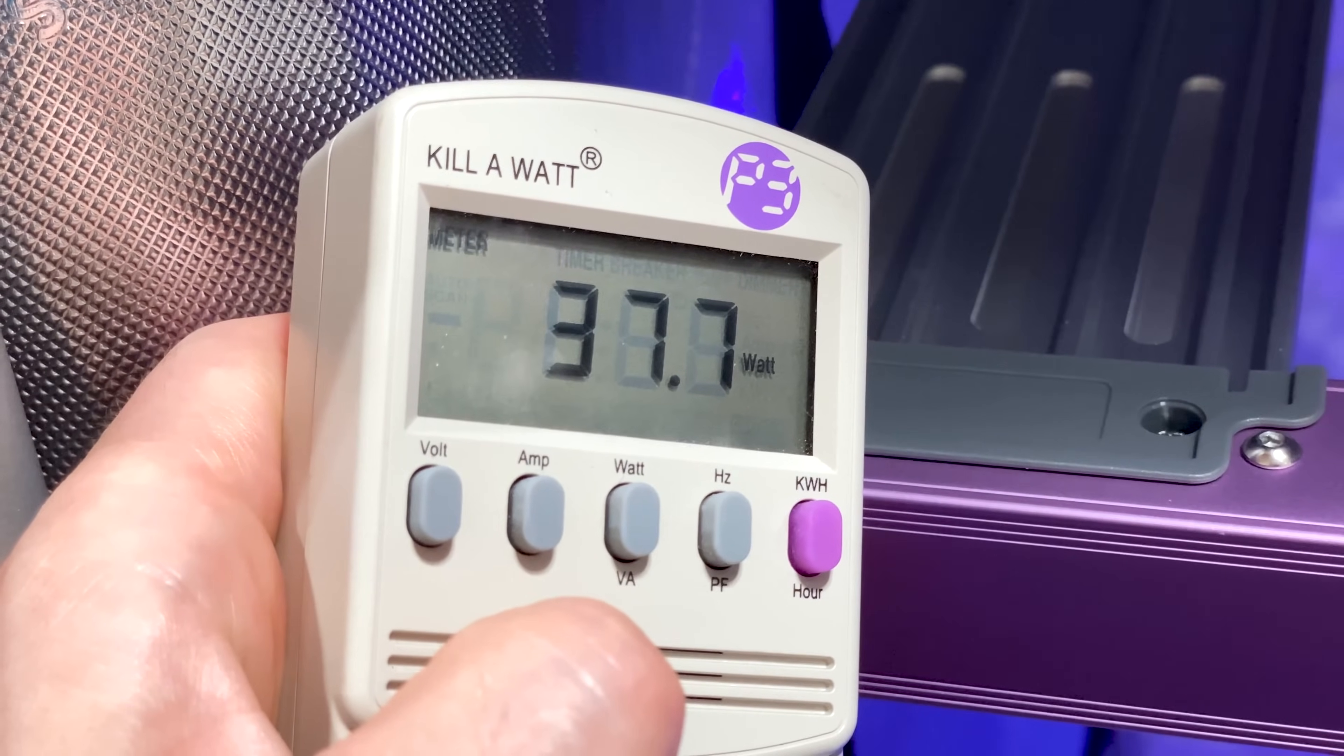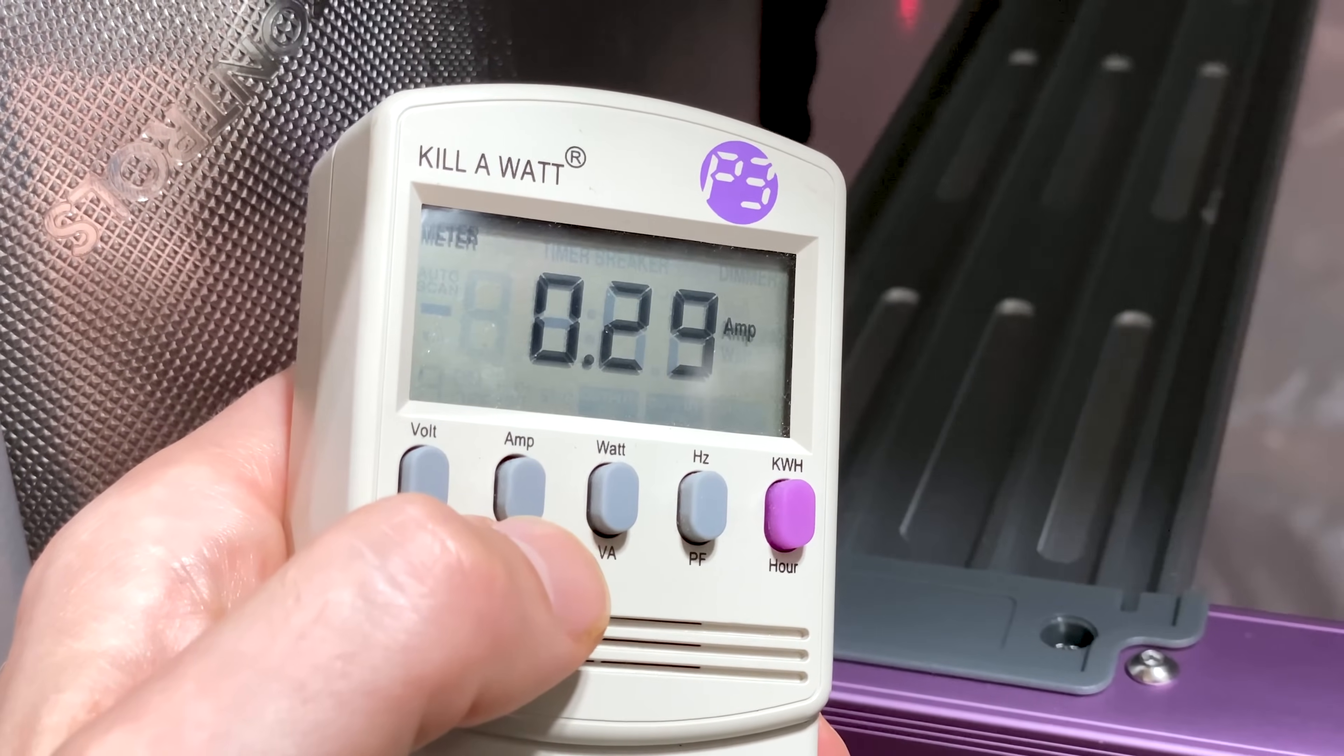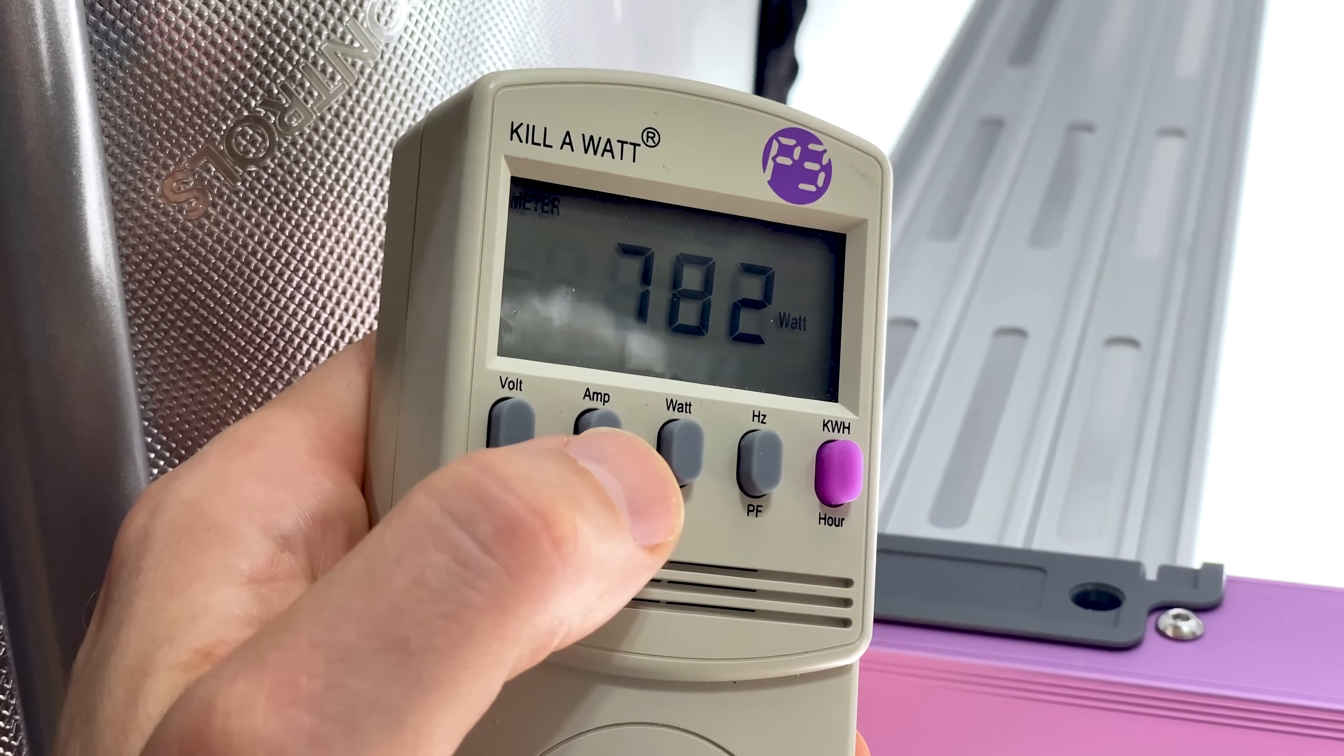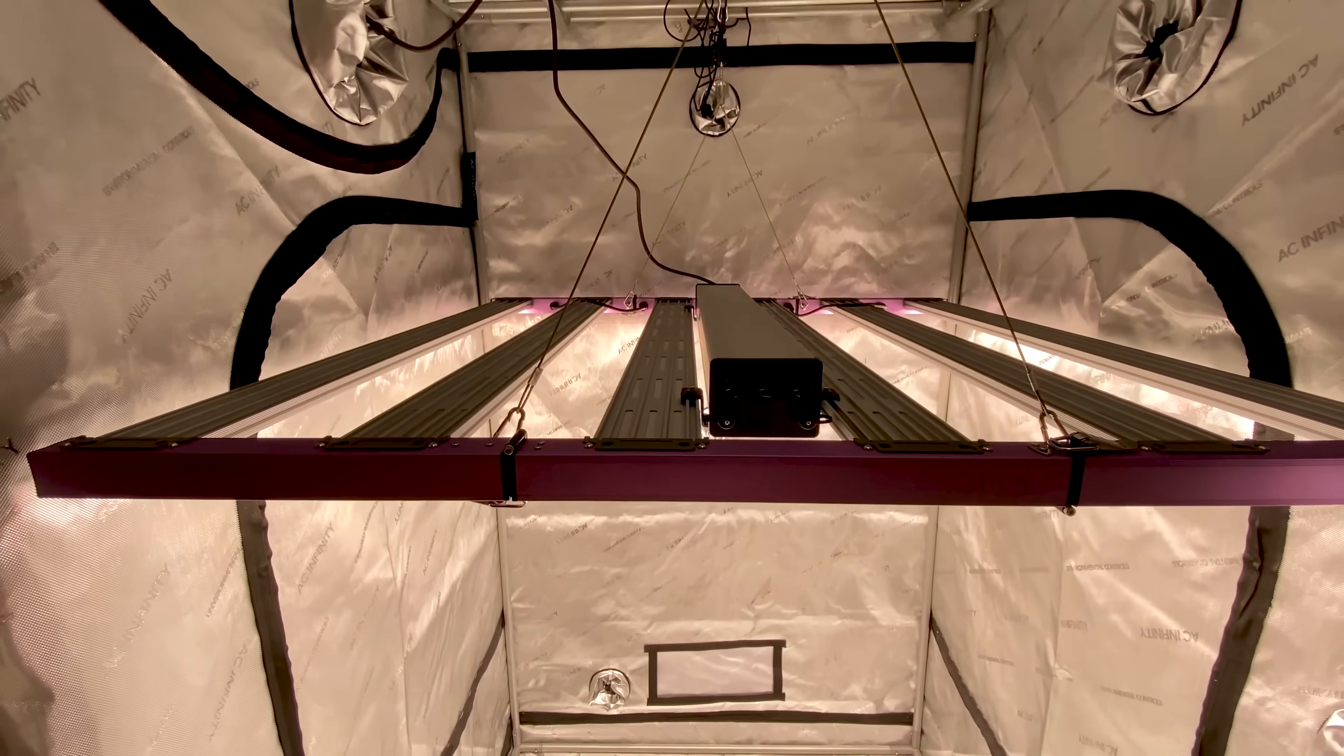The UV channel drew 37.7 watts at full power, the IR channel 28.5 watts, and full spectrum channel 782 watts at 6.9 amps. Expect half the amperage at 240 volts.